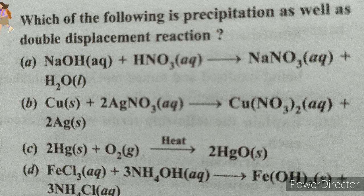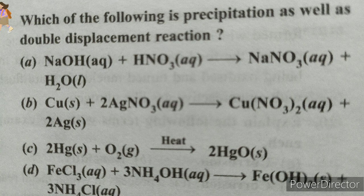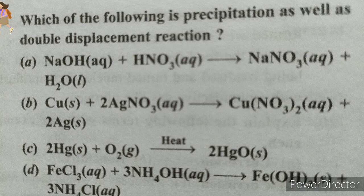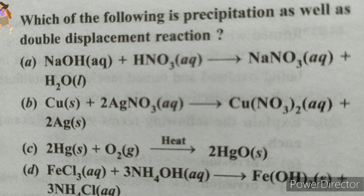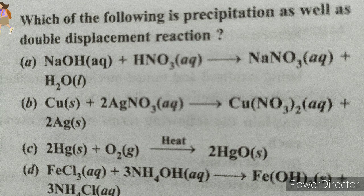So we got the clue. Aqueous means the liquid form; it's not a precipitate. So A and B won't be the correct answer. Let us check with C and D. In case of C, option C gives mercuric oxide alone, which is not a double displacement reaction. So the correct answer is option D.